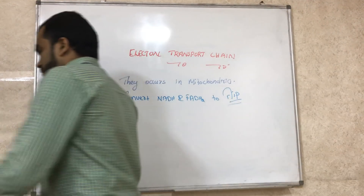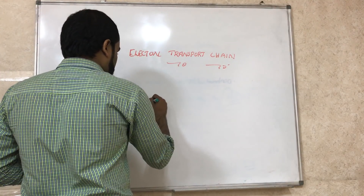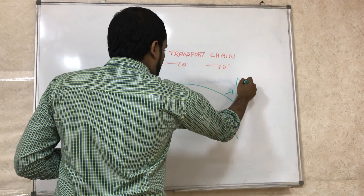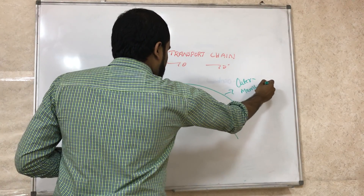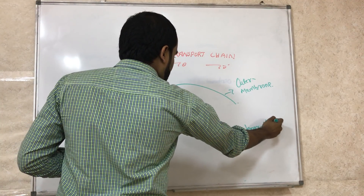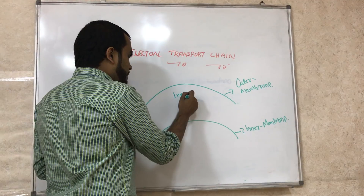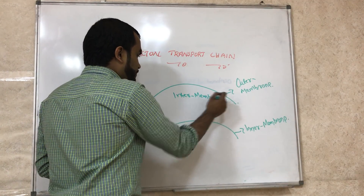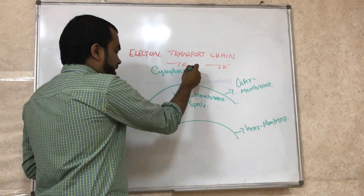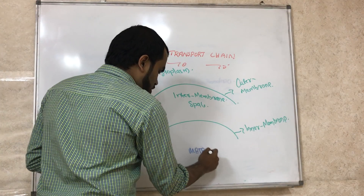Mitochondria is a double membrane organelle. It has an outer membrane and an inner membrane. The space between them is called the intermembrane space. The outer region is our cytoplasm, and the inner area of mitochondria is called the matrix.